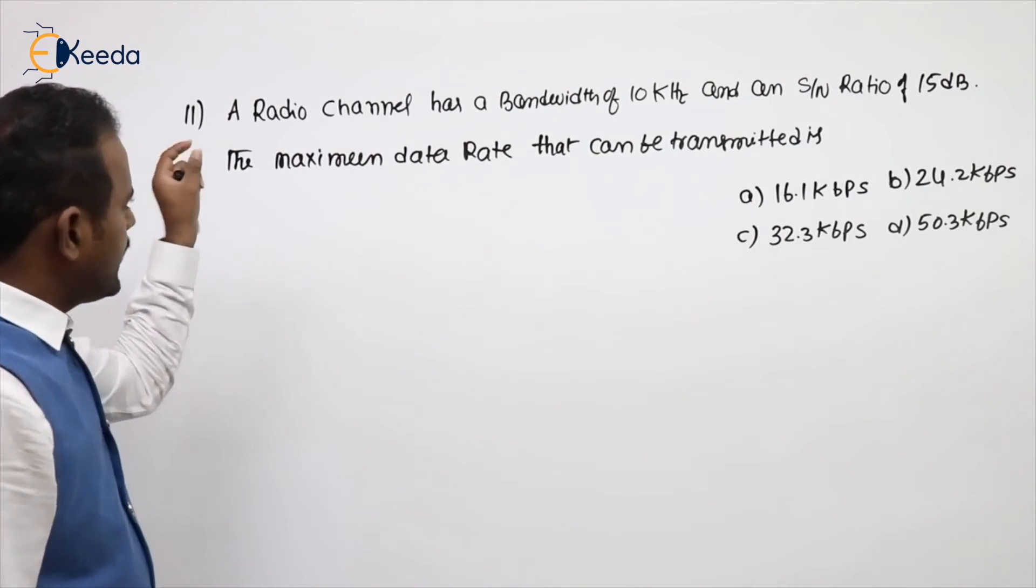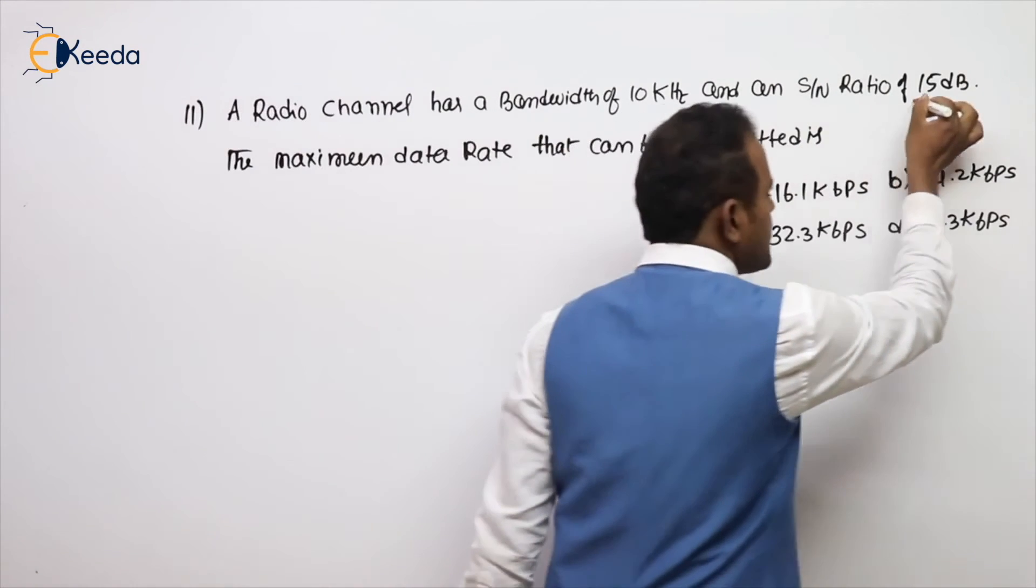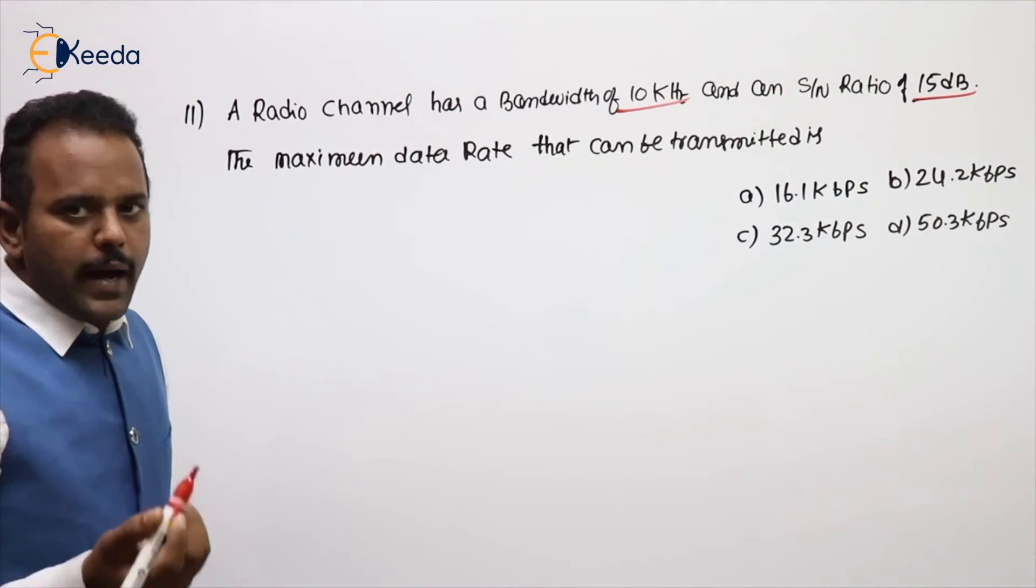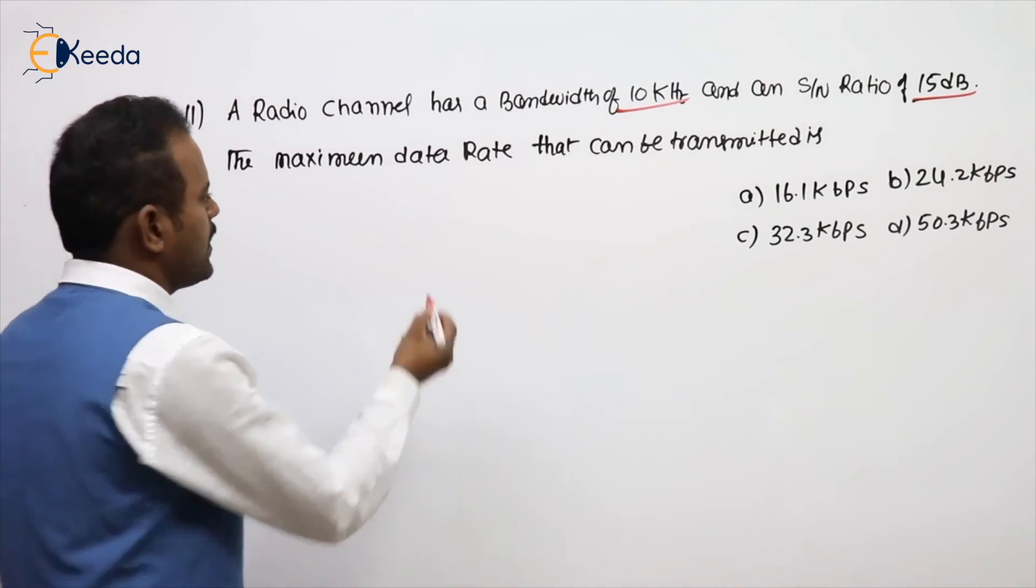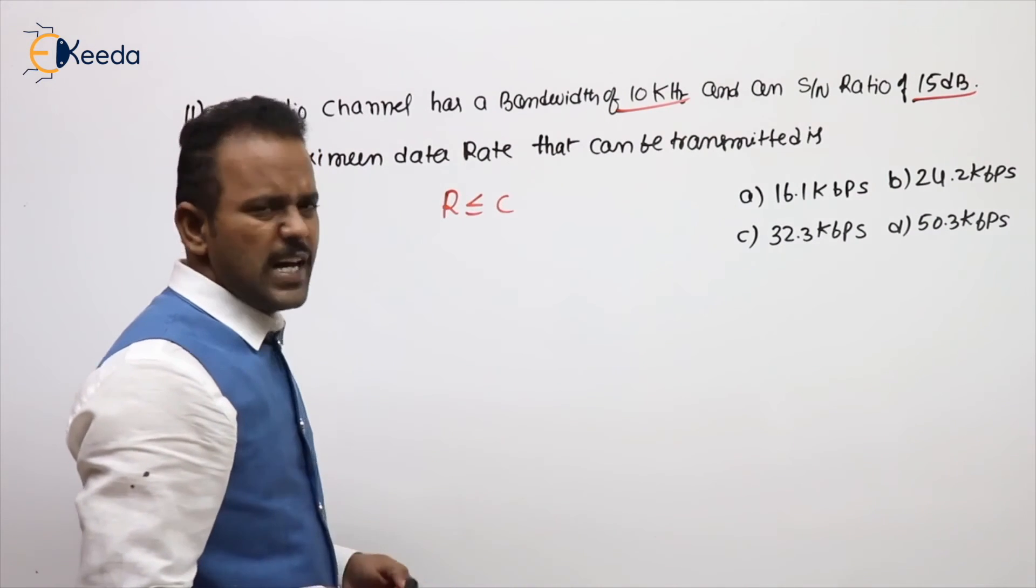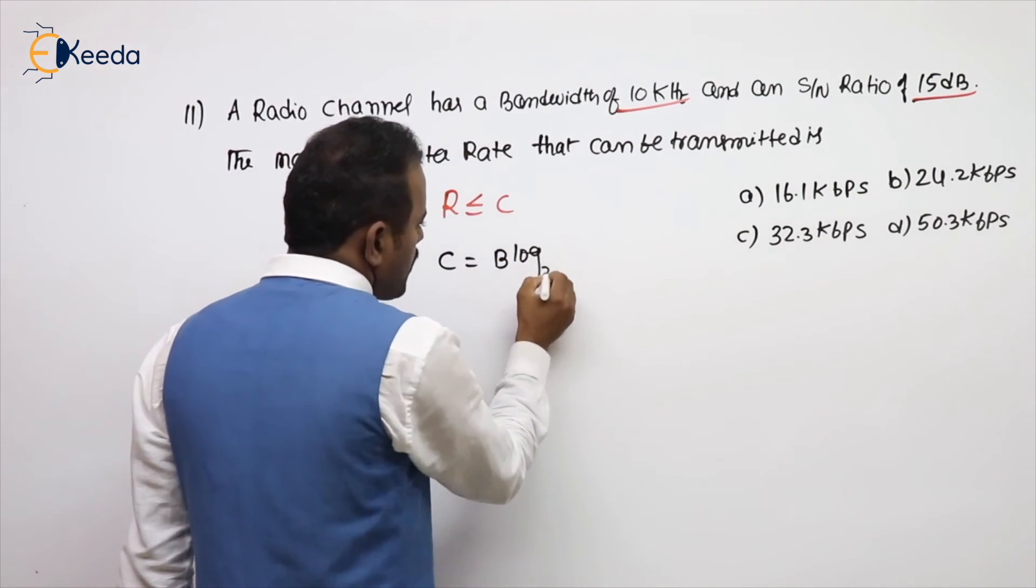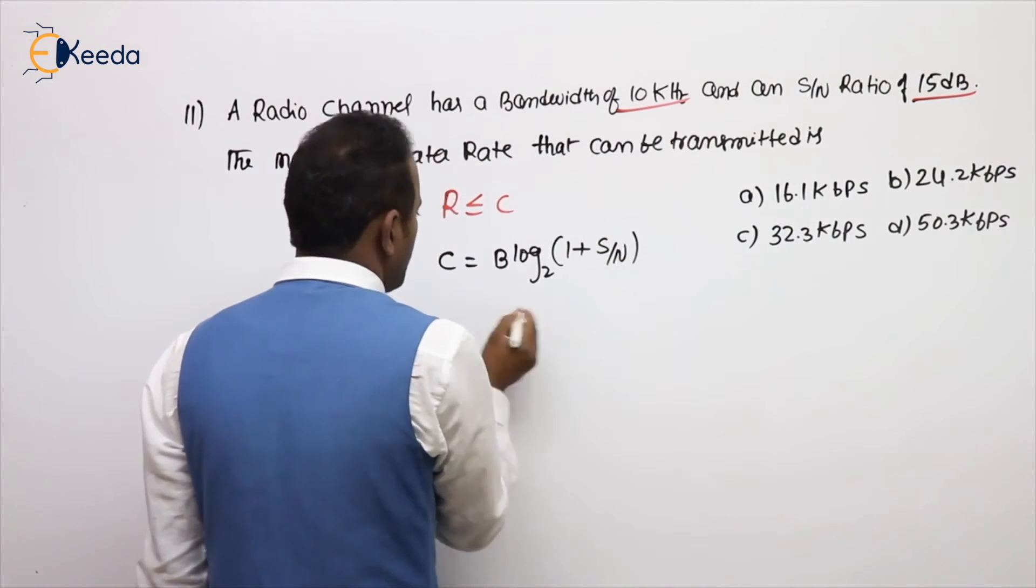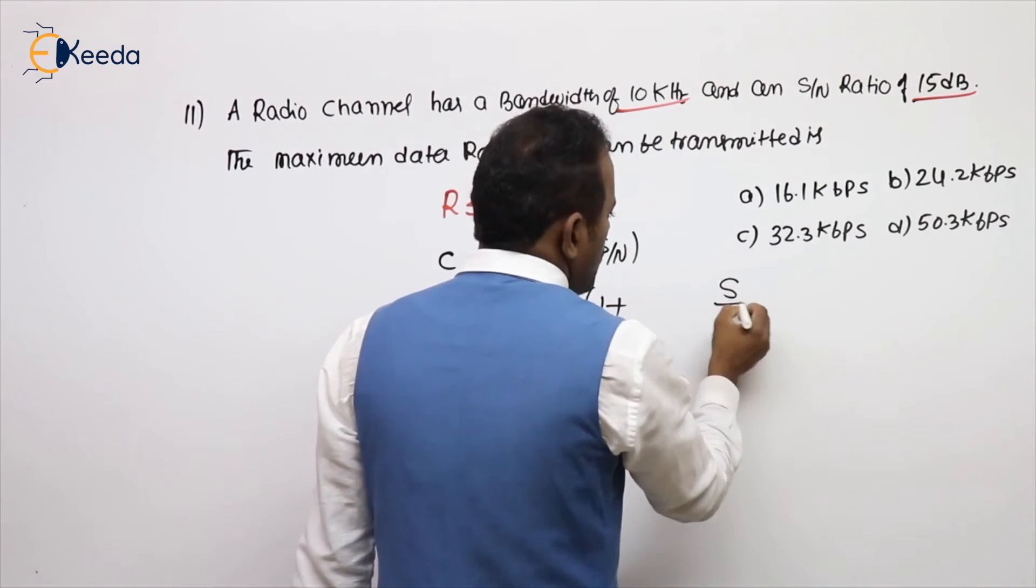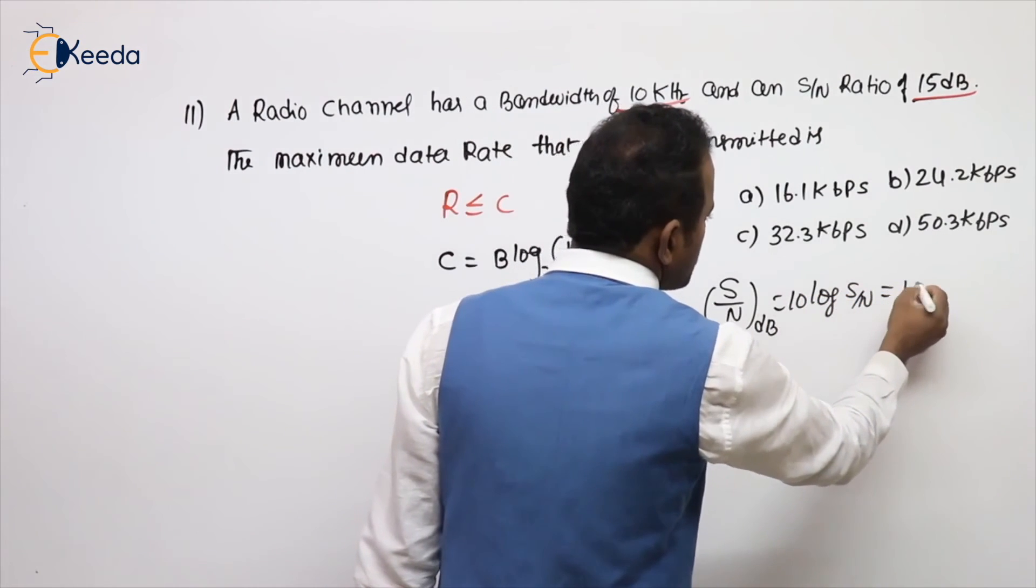See the next problem. A radio channel has a bandwidth of 10 kHz and a signal to noise ratio of 15 decibels. The maximum data rate that can be transmitted, the maximum data rate itself is called capacity of a channel. And this is a question asked in ESC 2013. What is the C formula? B into log base 2, 1 plus S/N. This S/N is a normal value. So B value is given 10k, log base 2 into 1 plus given decibels.